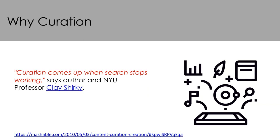Why would you consider curation in a digital or online library context? Clay Shirky suggests that curation comes up when search stops working. Using curated lists can help the teacher librarian create a library catalogue that has no dead ends. This means that when the user searches for a topic, even if the library collection does not include hard copy or digital resources to meet their needs, they are more likely to encounter a resource that has been created using already existing content but collected specifically to meet that particular search need.